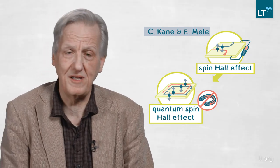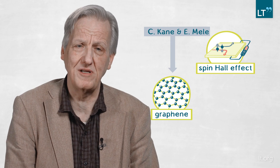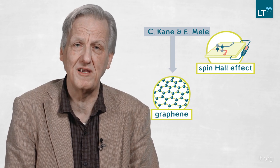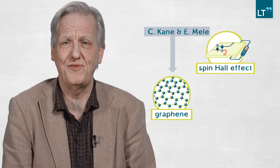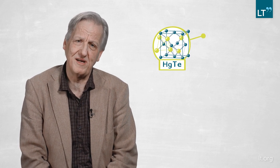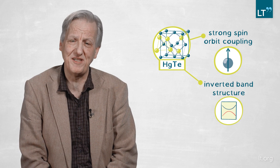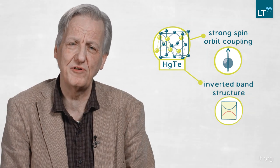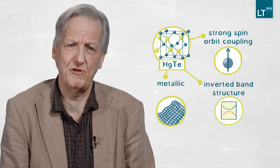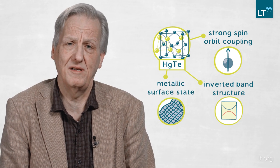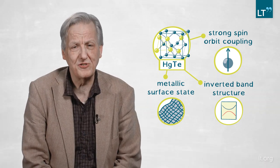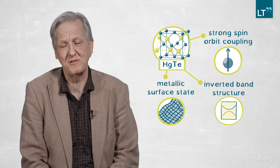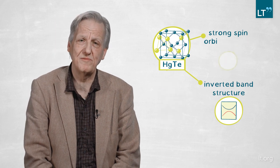The suggestion of Kane and Mele at that time was to use graphene, but graphene with an artificially high spin-orbit coupling of next-nearest-neighbor type, which was not very physical. I knew at that time that our material — mercury telluride — not only had a strong spin-orbit coupling, but it also has a weird inverted band structure. And because of this inverted band structure, it had a surface state occurring even when the bulk was insulating — a metallic surface state. I thought this might be something related to the Kane and Mele proposal.